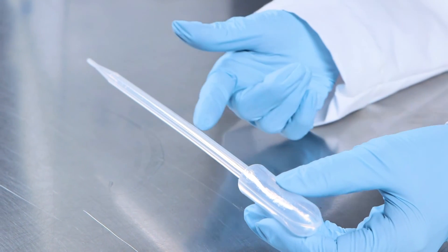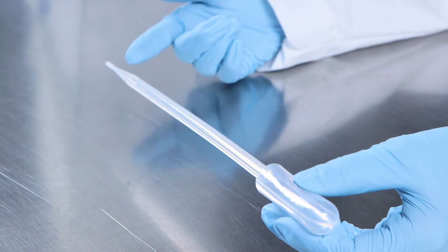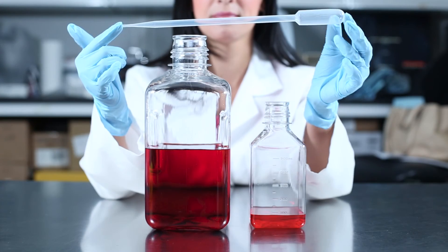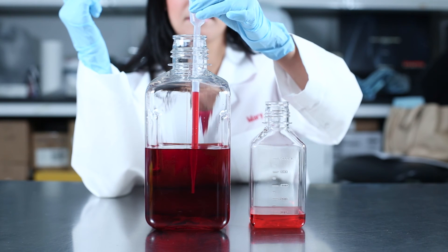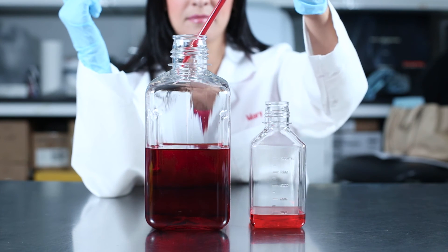Samco Extra Long Transfer Pipettes range from 6 to 12 inches in length. Extra Long Transfer Pipettes are ideal for pipetting from a tall bottle or for transferring large quantities of liquid. The bore size is a standard eighth of an inch.